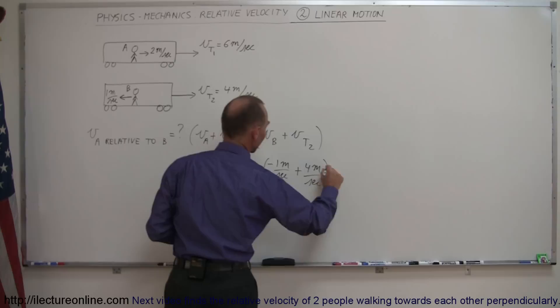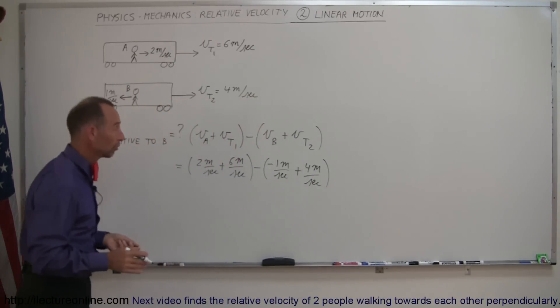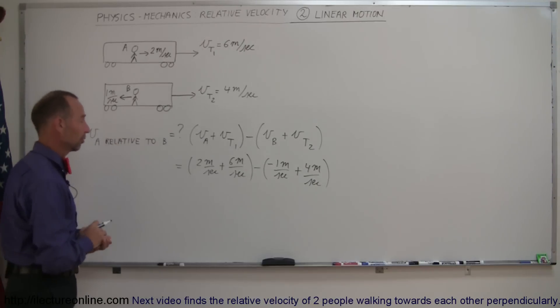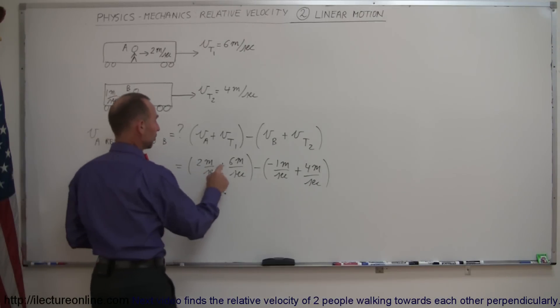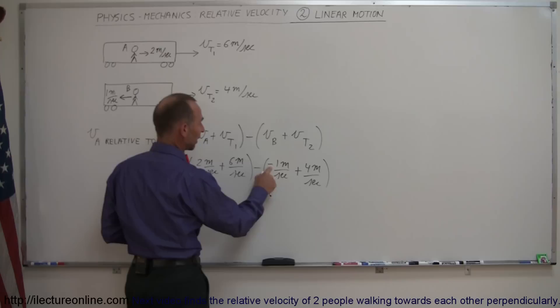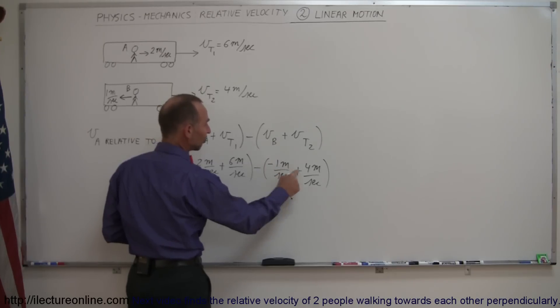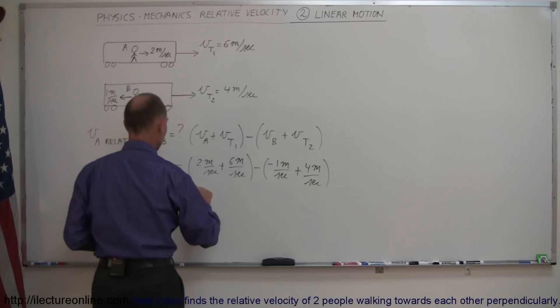And that will give us the correct conversion, in other words, the velocity of A with respect to observer B. So it gives us 2 plus 6 is 8, minus times minus is plus 1, so that would be 9, and minus 4 would be 9 minus 4, which is 5 meters per second.